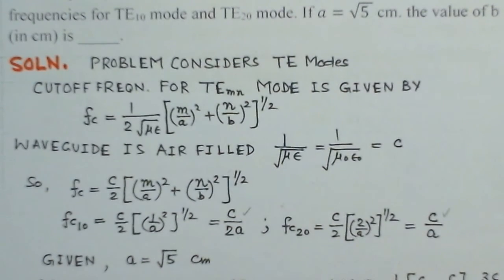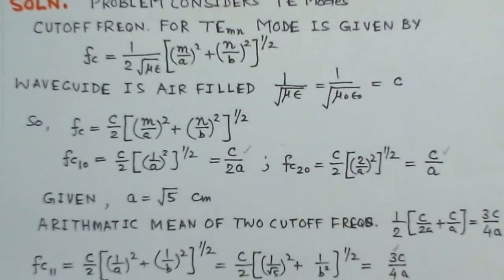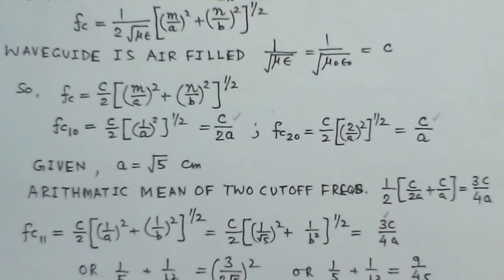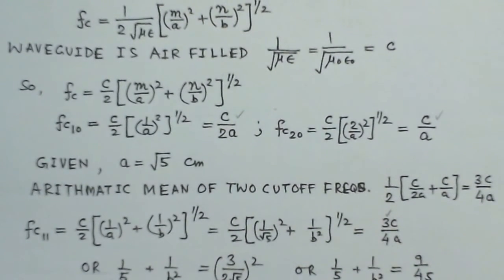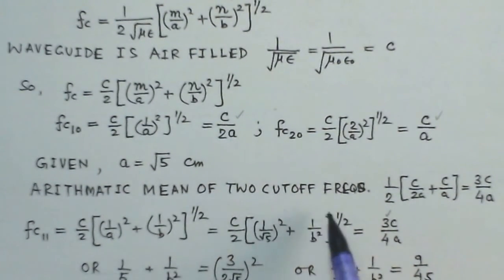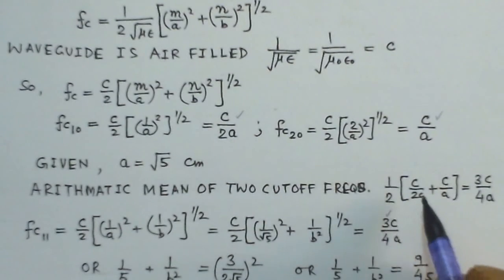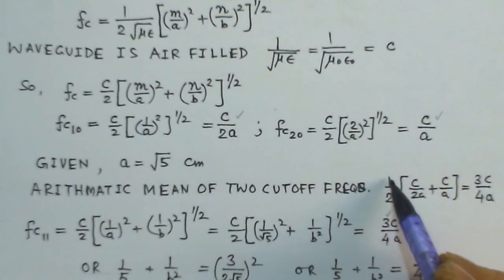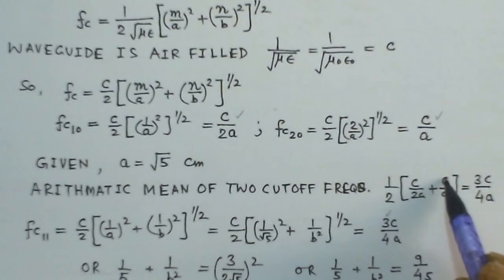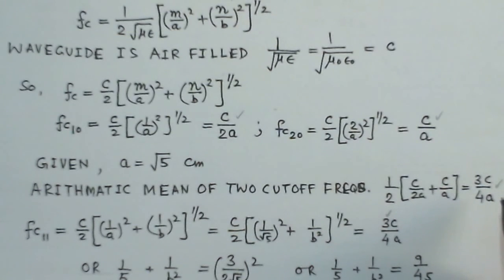It is also given that A dimension of the waveguide is root 5 cm. So, now we will find the arithmetic mean of the two cutoff frequencies. Arithmetic mean means half of C over 2A plus C over A. This gives me 3C over 4A. This is the arithmetic mean of the two frequencies.